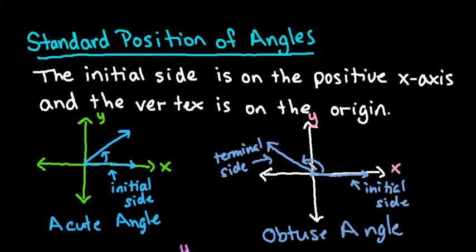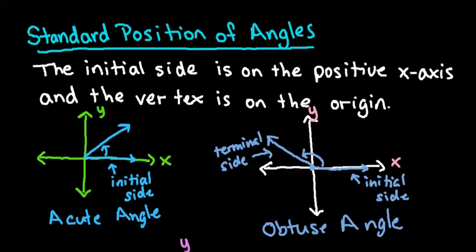Obtuse angles will stop somewhere between 90 and 180 degrees. The terminal side is the name of the side where you stop, so you stop at whatever measure your angle of opening is.